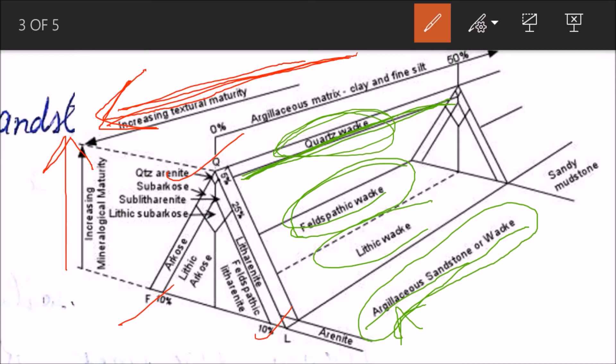Argillaceous just means presence of clay and silt. Beyond this 50 percent, everything is sandy mudstone. So we don't classify much in that region. Main classification is from 0 to 10 percent this line, then from 10 to 50 percent.